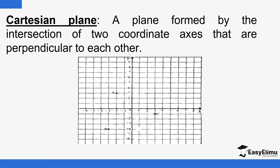There is another term used here called a Cartesian plane. This is a plane formed by the intersection of two coordinate axes that are perpendicular to each other. It's like we have two number lines intersecting at the zero mark. This zero mark where they intersect is normally called the origin. So if points are not in a straight line — they are scattered on a surface — then you use two intersecting number lines, which we call coordinate axes: a vertical axis and a horizontal axis. Where they intersect, we call the origin.